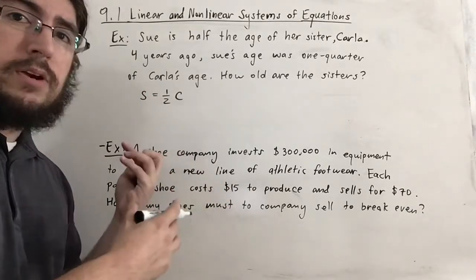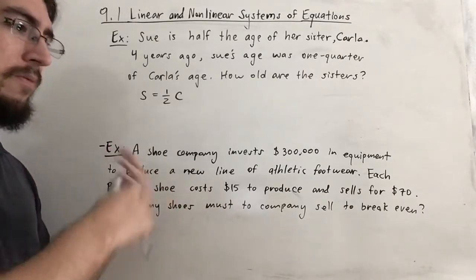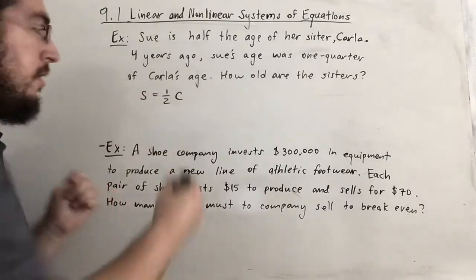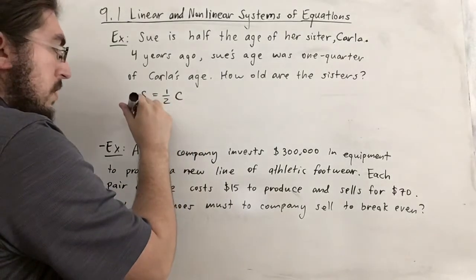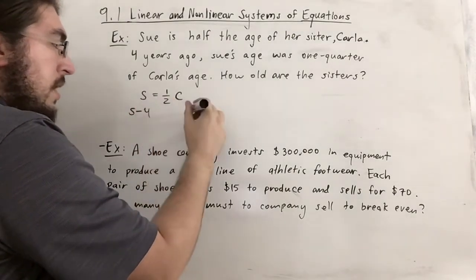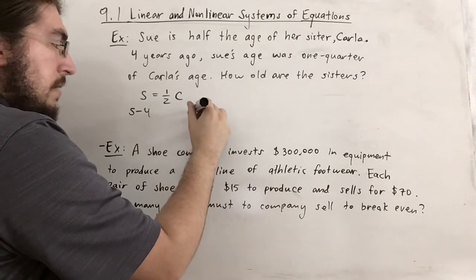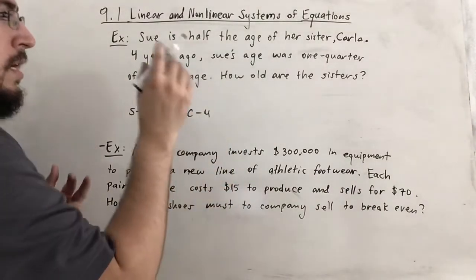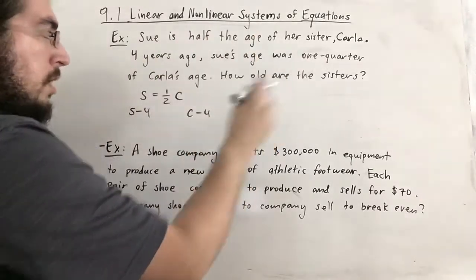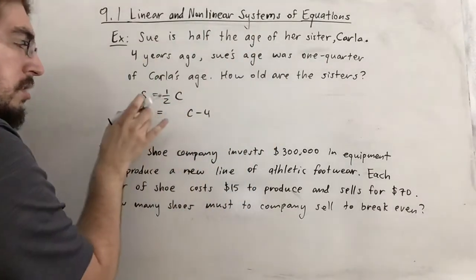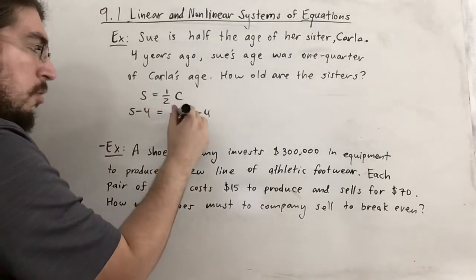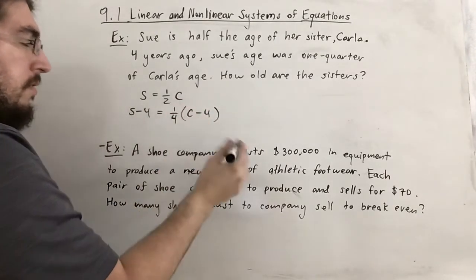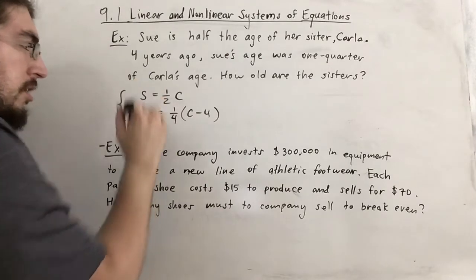For the second equation, going back four years means their ages reduce by four. Four years ago, Sue's age was S − 4 and Carla's was C − 4. The condition says Sue's age four years ago was one quarter of Carla's age four years ago: S − 4 = (1/4)(C − 4). This forms our system of equations.